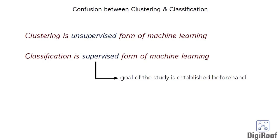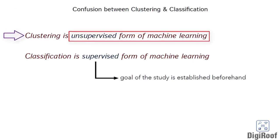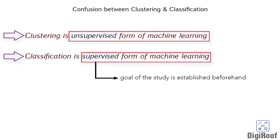There is also a possibility to confuse clustering with classification. Let's understand the difference between these two related concepts. While clustering comes under the unsupervised form of machine learning, classification is a supervised form of machine learning.